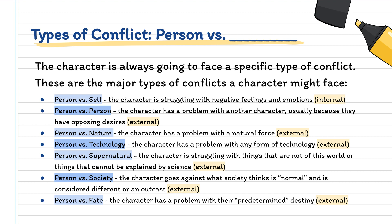The next one is person versus person. This is when your character has a problem with another character, usually because they have opposing desires. Think of your protagonist versus your antagonist — they both want different things and so therefore they're going to have a problem with each other. That is person versus person.